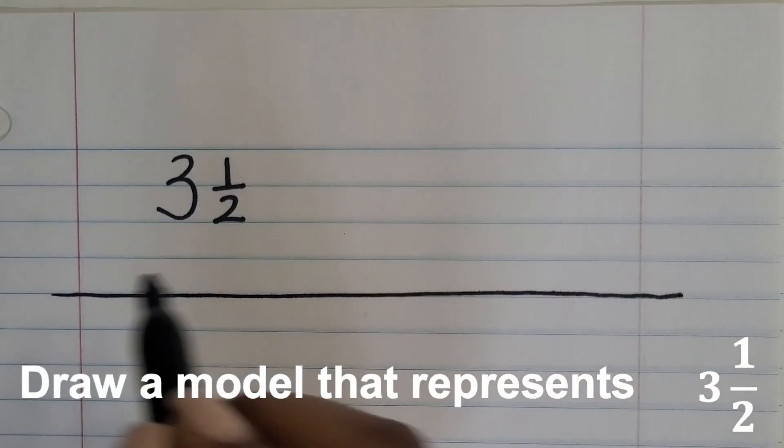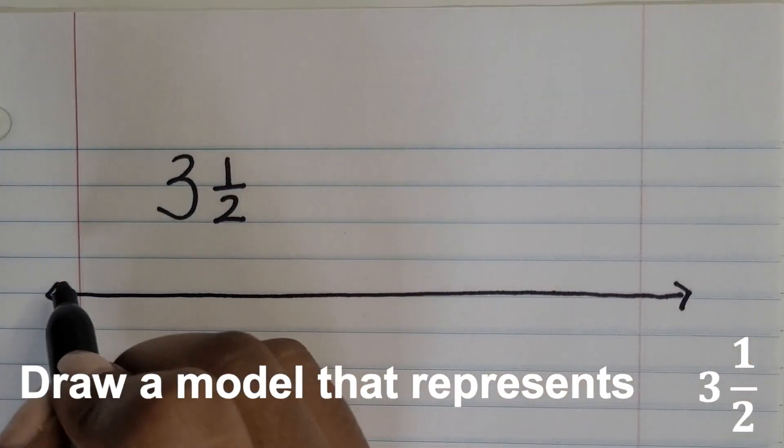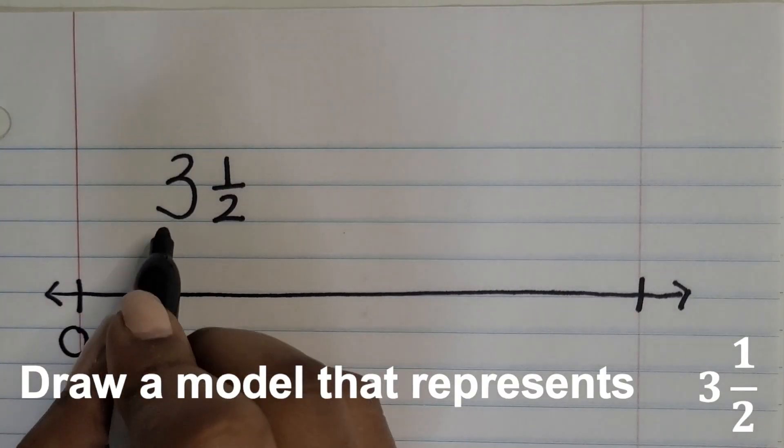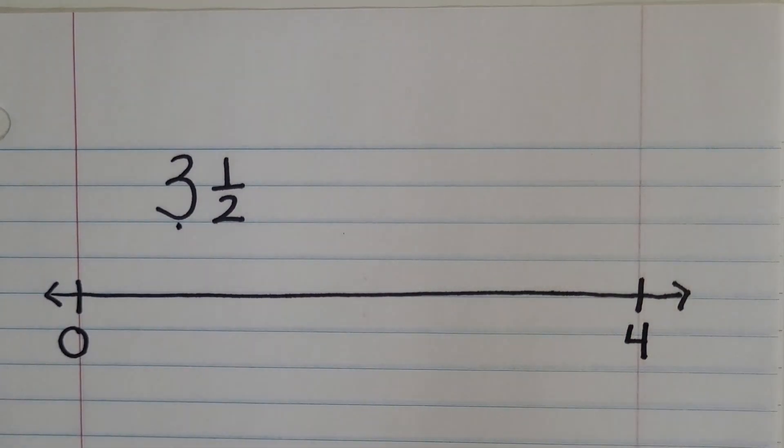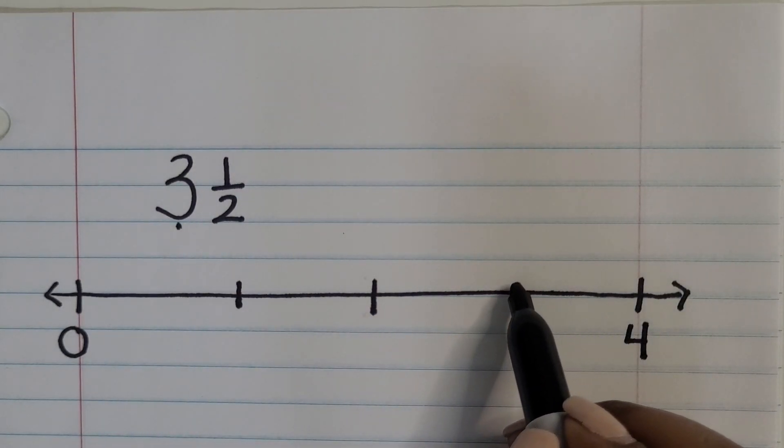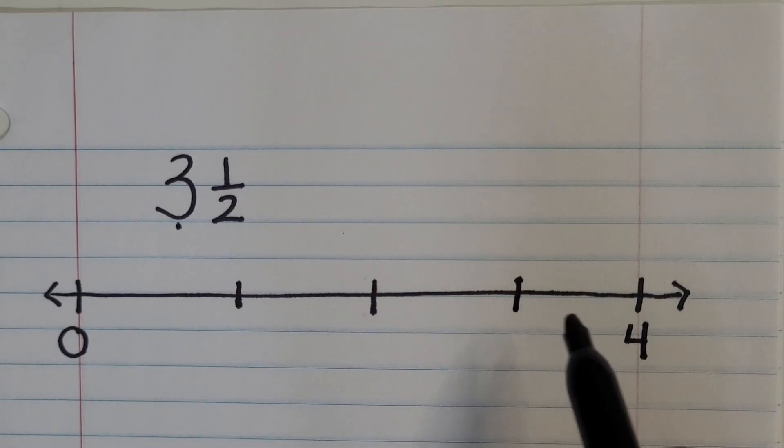In our final example we'll represent 3 and 1/2 using a number line. Our first endpoint is zero. Because we have a number that's greater than three holes our last endpoint needs to be four. Partition the number line in half and then partition each half in half. Those tick marks will actually represent whole numbers.